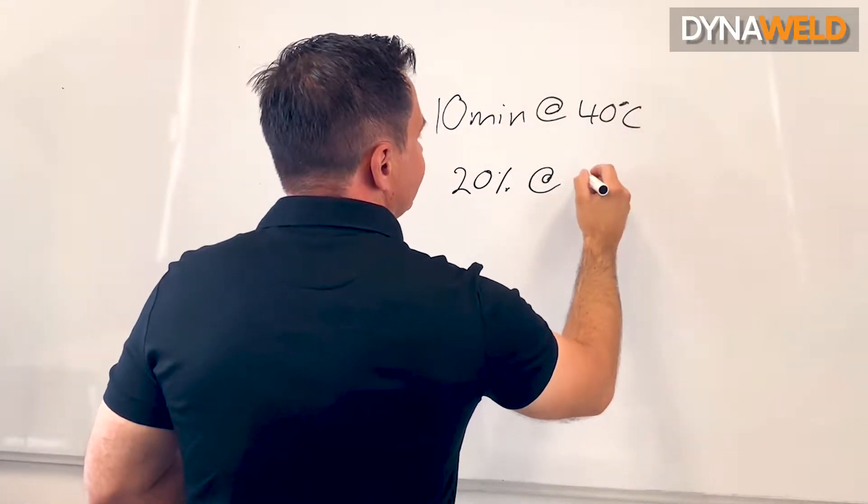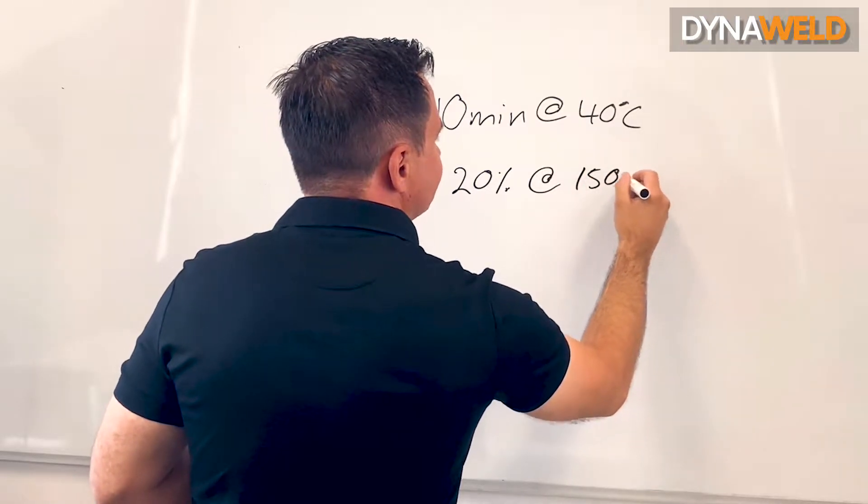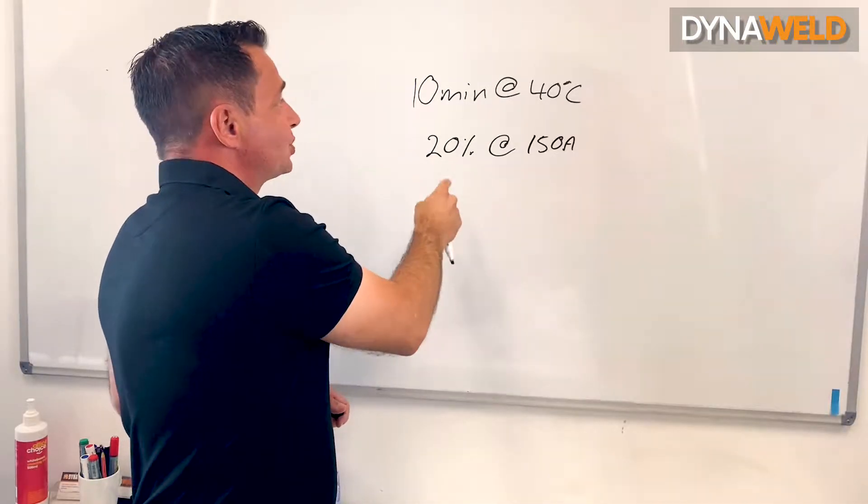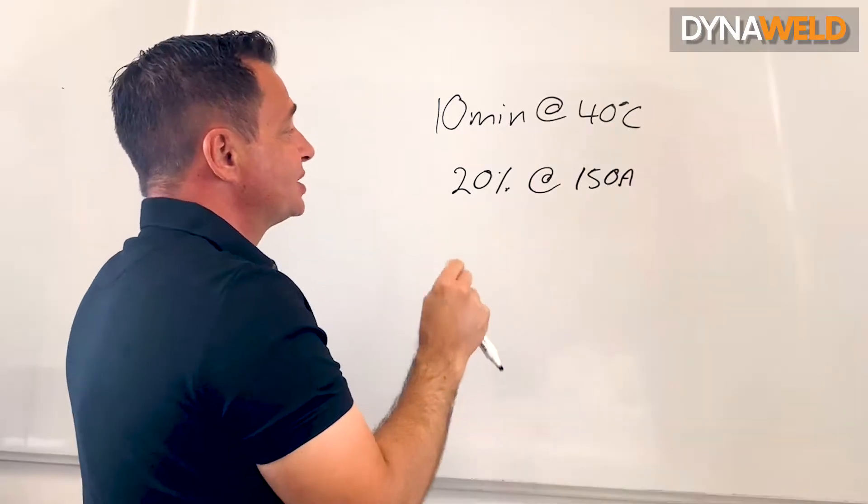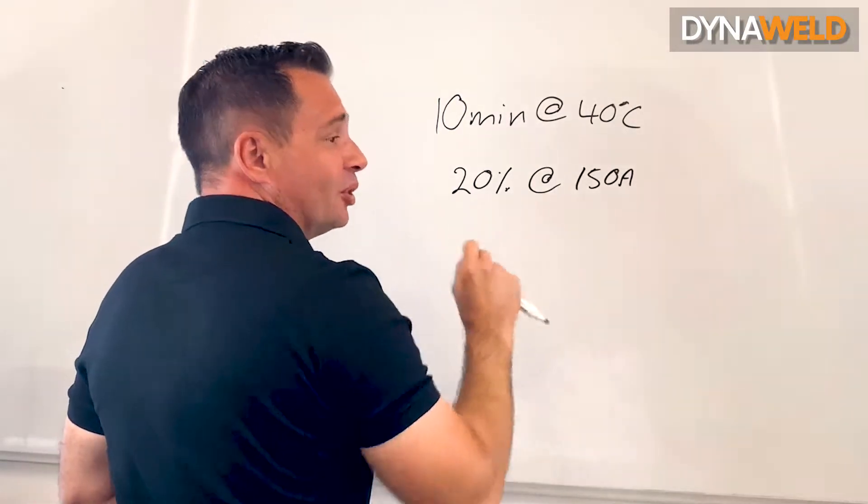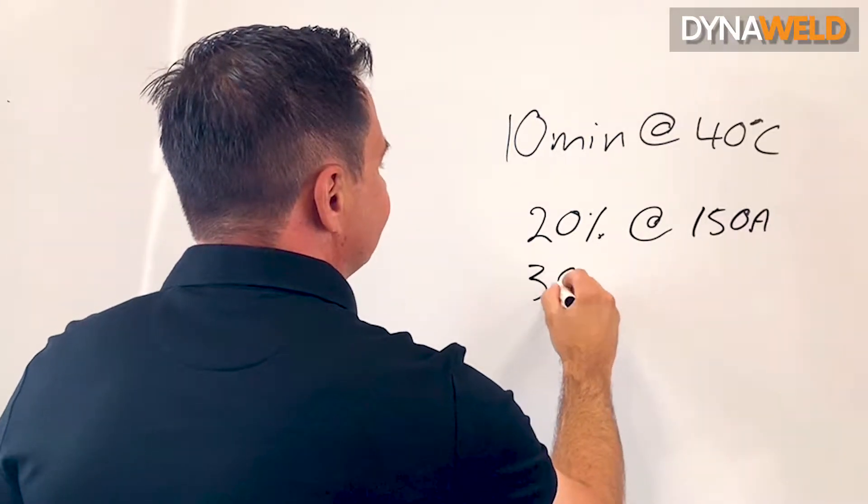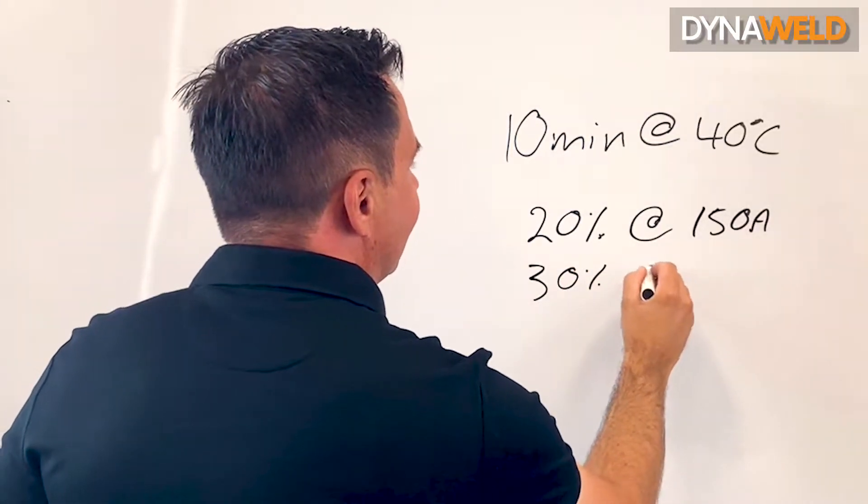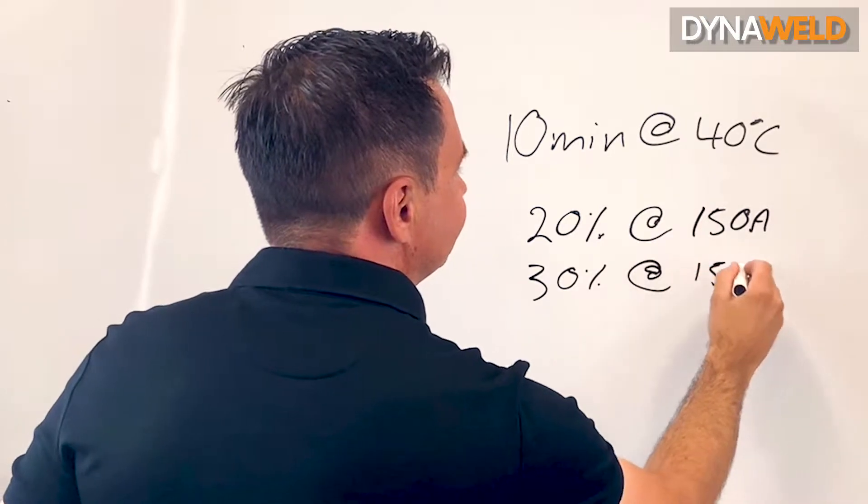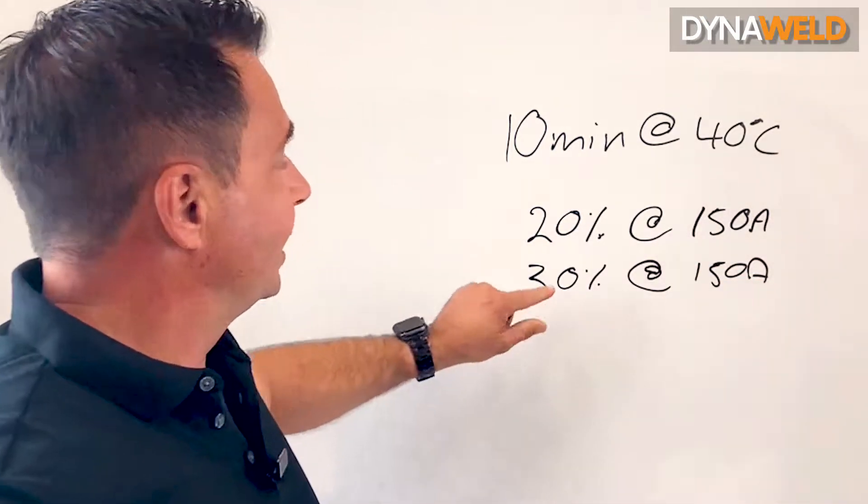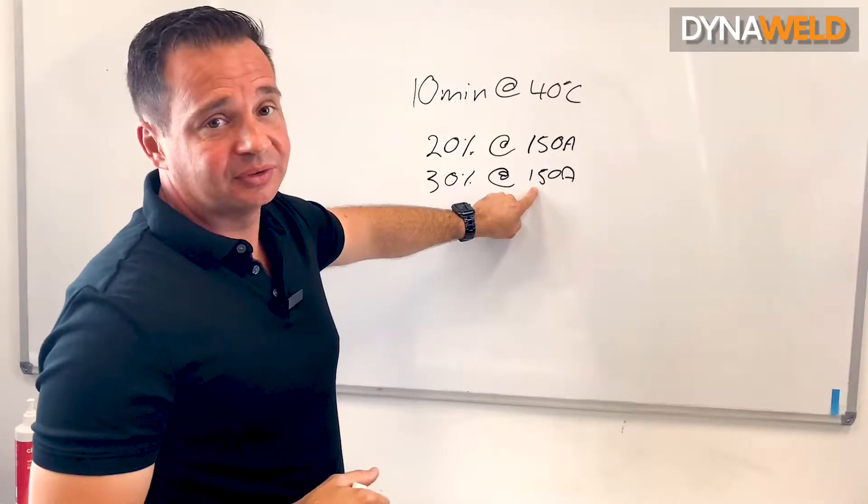For example, might be 150 amps. For two minutes is 20% of 10 minutes. So that means for two minutes, the machine can weld nonstop at 150 amps. If it was 30% at 150 amps, it would mean three minutes at 150 amps.